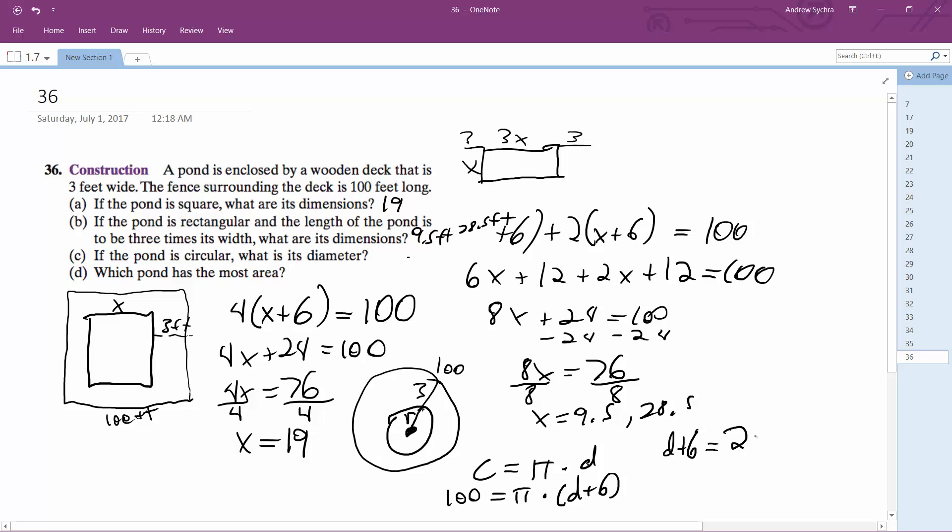Which is like 31.8. And then subtract it, so diameter is equal to—subtract 6 from there—25.85.